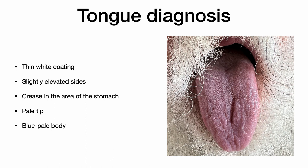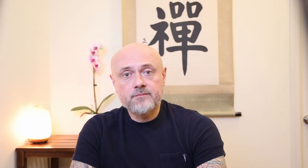Both sides of the tongue are slightly elevated, indicating liver qi stagnation. A deep crease in the center of the tongue indicates weak stomach yin. The tip of the tongue is thin and pale, which is a sign of heart qi deficiency. The body of the tongue is blue and slightly pale, pointing toward cold and blood stagnation.